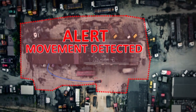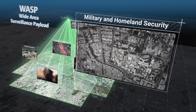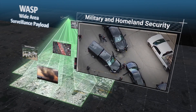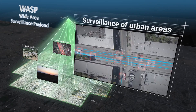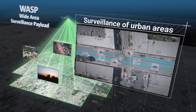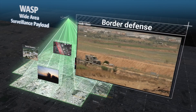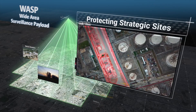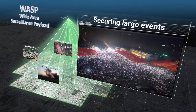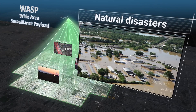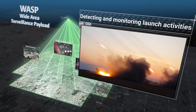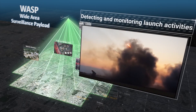The WASP system has many uses for both military and homeland security: surveillance of urban areas for police or military usage, border defense, protection of strategic sites, securing large events, control and coverage of natural disasters, and detecting and monitoring launch activities before and after the launch.